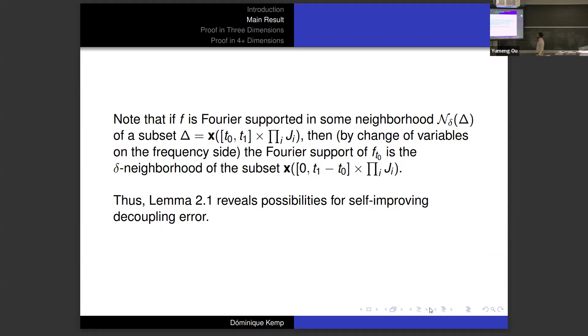How this relates to decoupling is that if we have some function F that is Fourier supported in a delta neighborhood of a cap subset delta, the Fourier support of F^{t_0} will be the delta neighborhood of this subset, which in particular has t now bounded by the length of the previous t interval. That makes it possible for our decoupling error to be self-improving within certain iterative schemes.